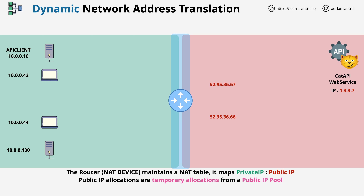With dynamic NAT, the public-to-private mapping is allocation-based, so it's allocated as required.